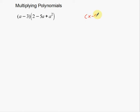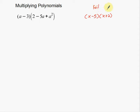I'll do a quick example: x minus 5 times the quantity x plus 2. This right here is a binomial times a binomial. You've done this before — it's called foiling: First, Outer, Inner, Last. That's why we call it foiling. It's an easy way to remember what to multiply.